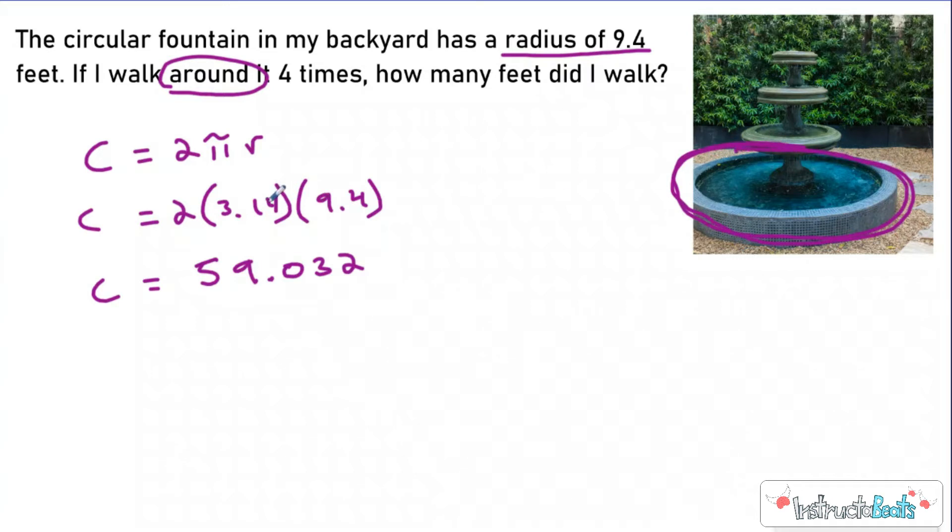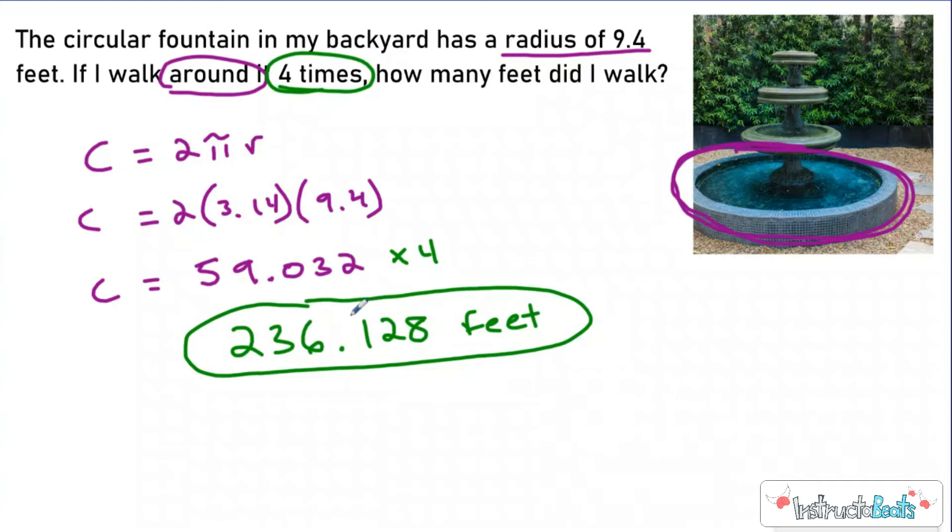But what you don't want is just to find the circumference because you didn't walk around it once. I walked around it four times. So typically in real life, it's not just find the circumference, find the area. You have to actually do something with it. So here's my circumference. Now I need to multiply that by four to figure out if I walked around it four times, how far did I walk? And when you solve that, you're going to see that I walked 236.128 feet.